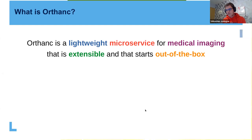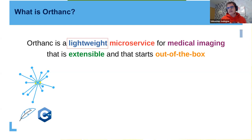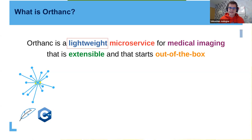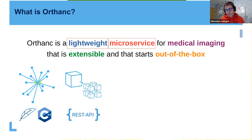In one sentence: Orthanc is a lightweight microservice for medical imaging that is extensible and starts out of the box. Lightweight means it's written in C++ — a very lightweight solution that can be deployed in many infrastructures and even in multiple instances within one institution for different tasks. It's also a microservice, meaning that thanks to its REST API, you can create new applications on top of Orthanc without having to deal with DICOM storage or communications.